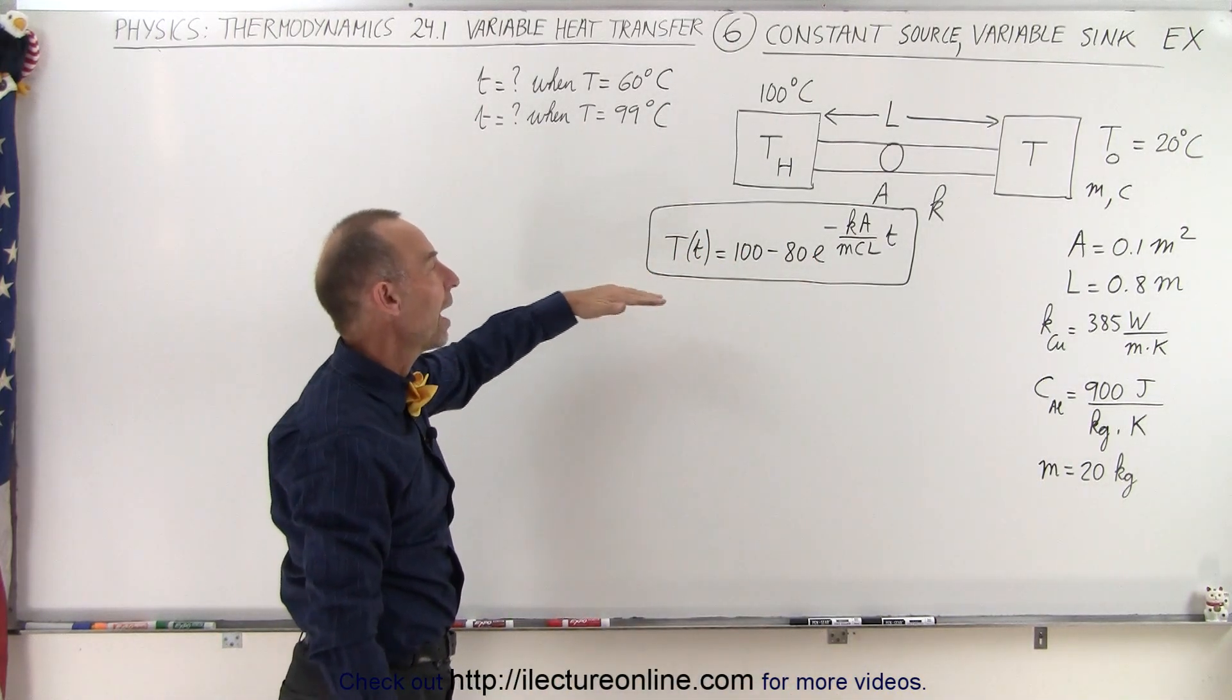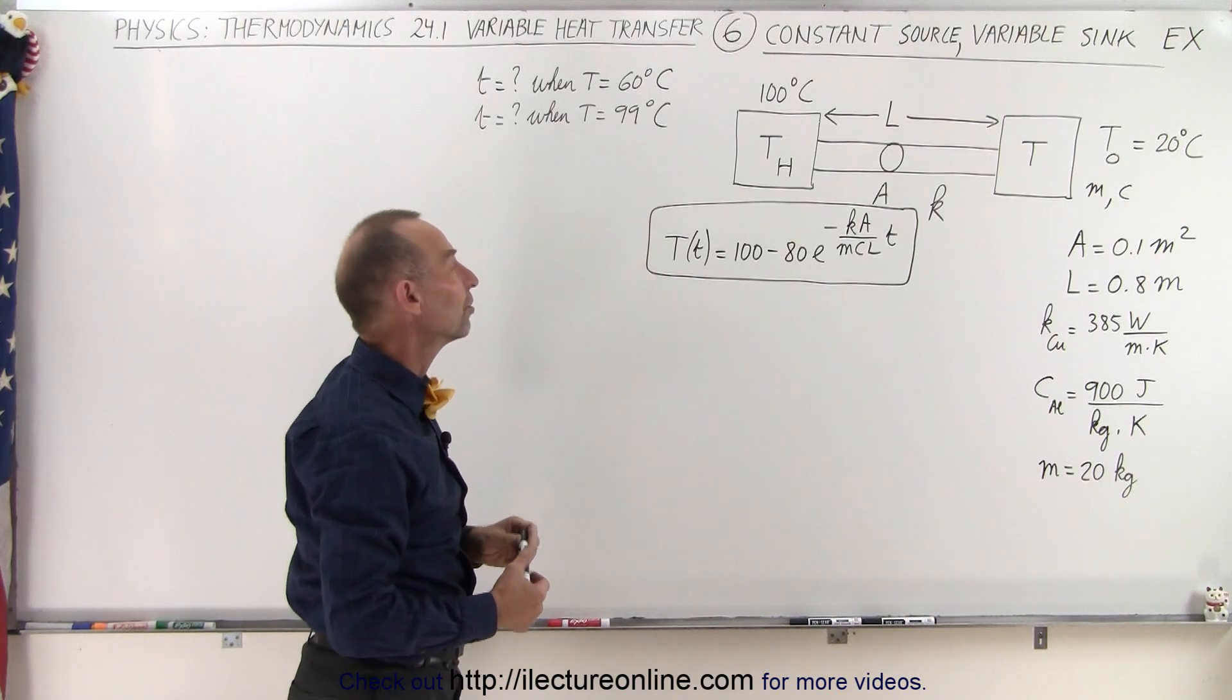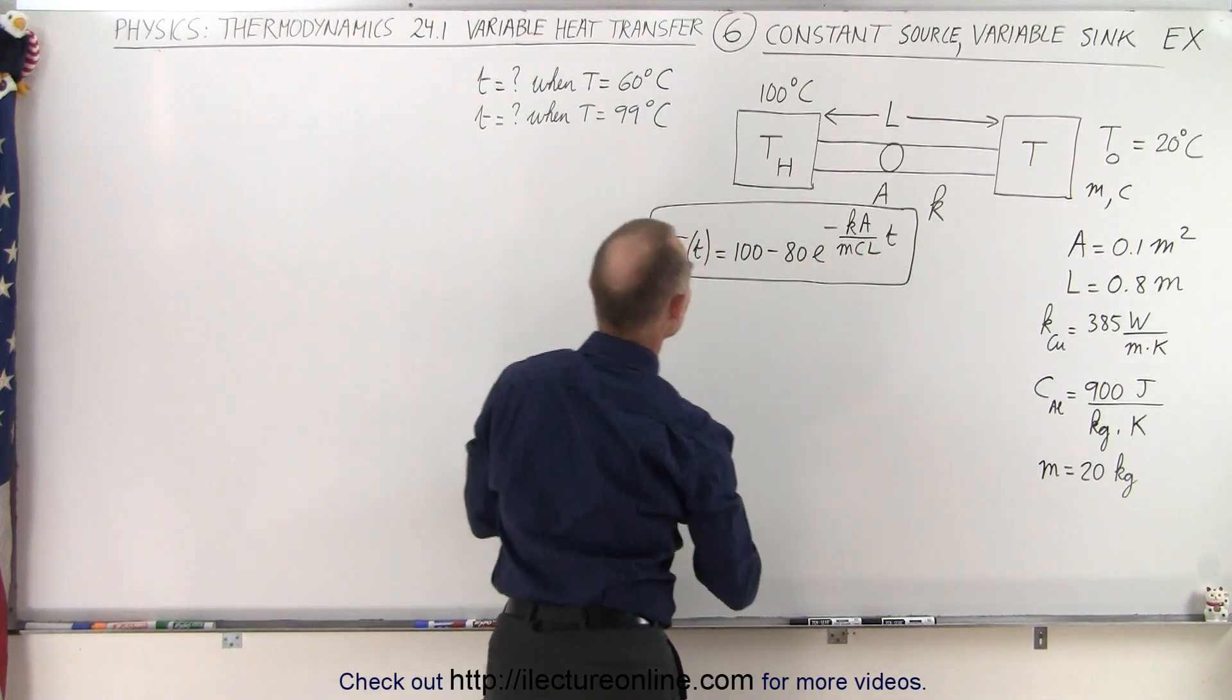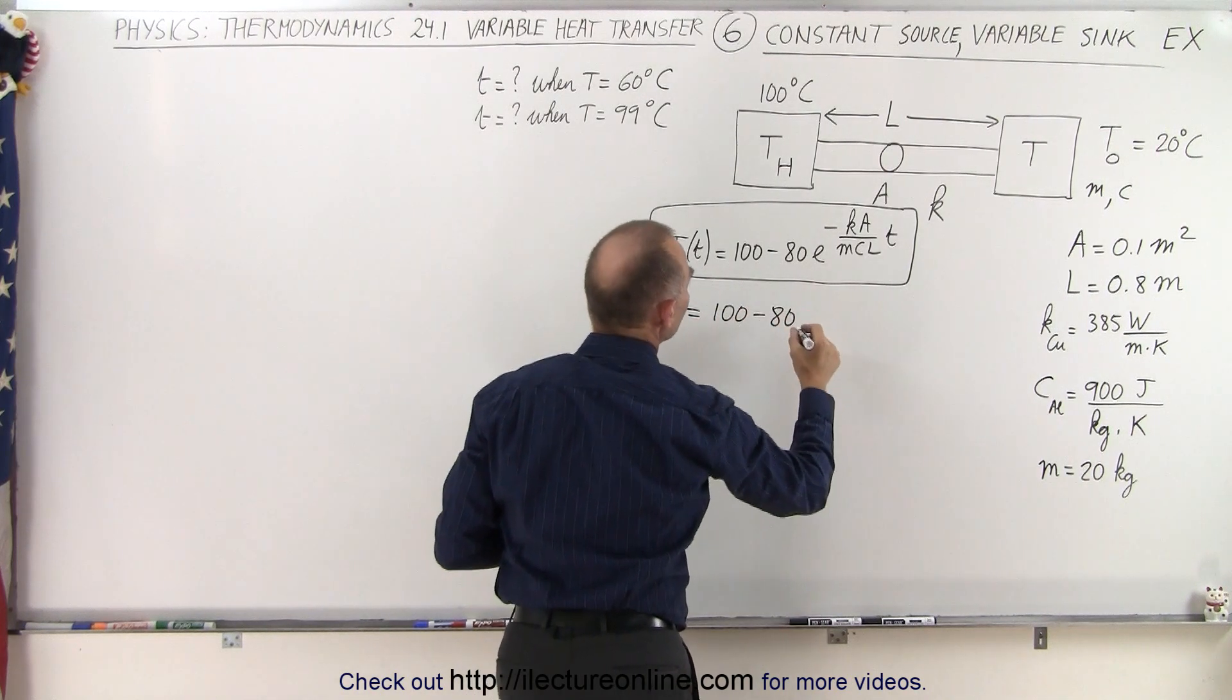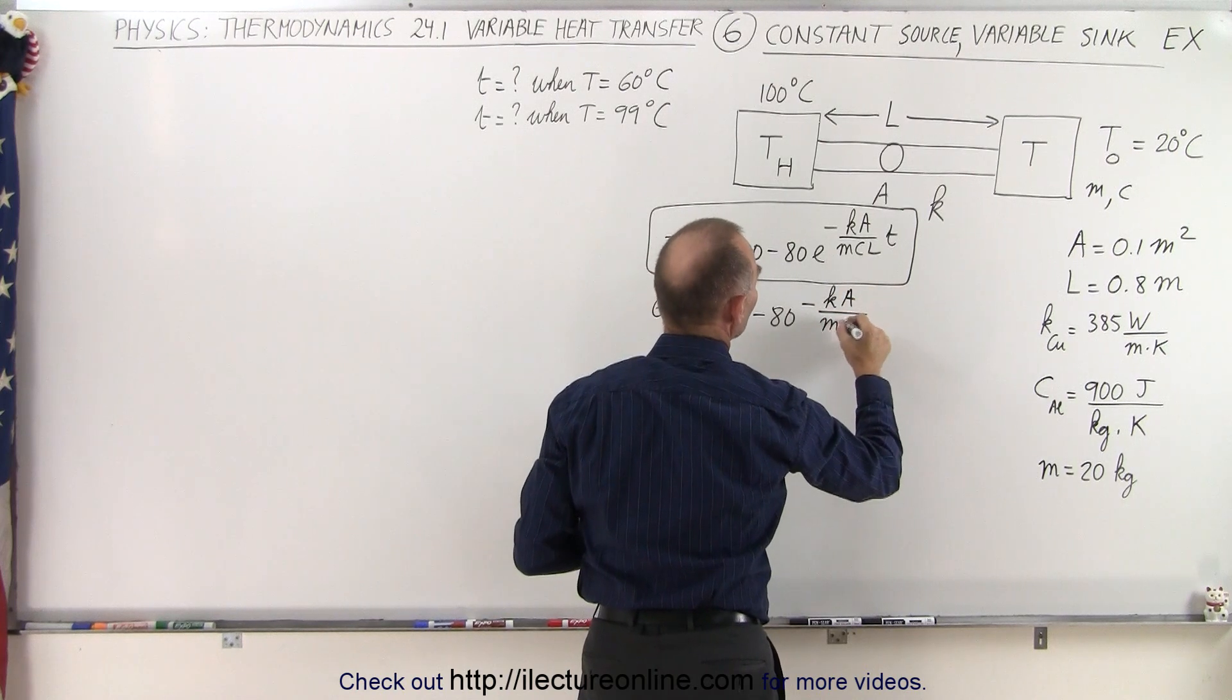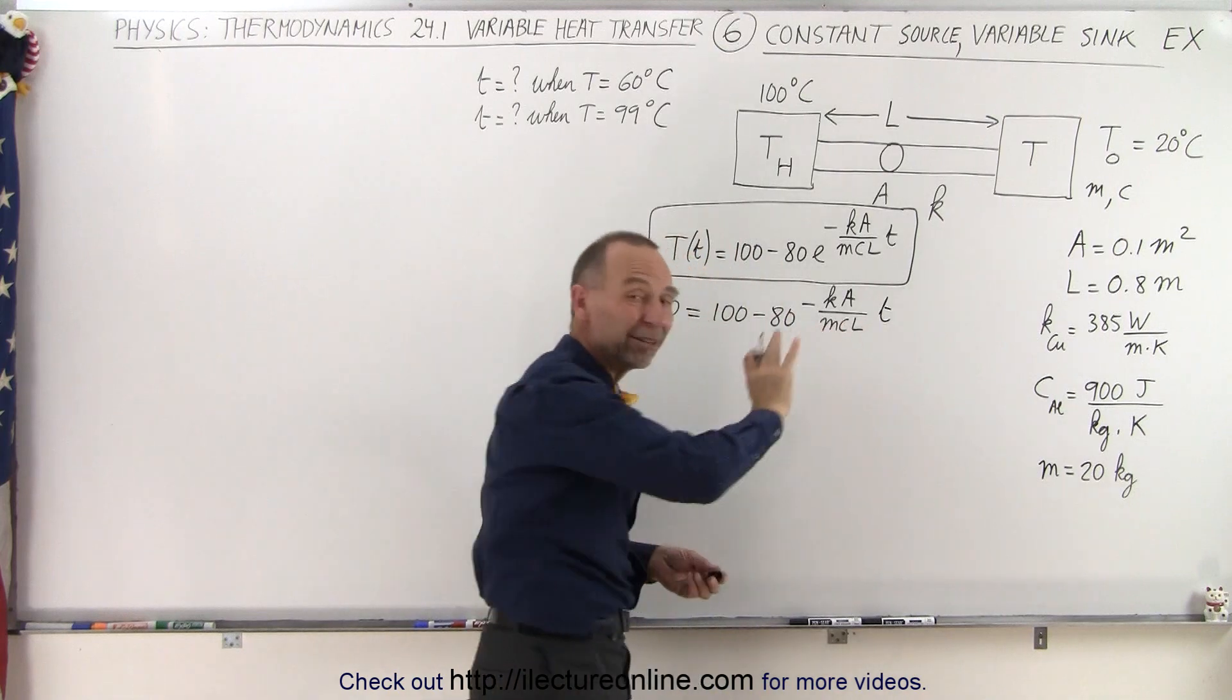So here's the equation, how do we find the time when the temperature reaches 60 degrees? What we need to do is plug in 60 here and solve this equation for T. So that gives us 60 equals 100 minus 80 times E to the minus KA over MCL times T and we're going to leave that there for now and plug in the values later.